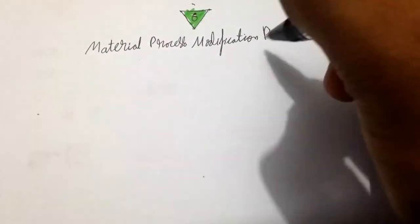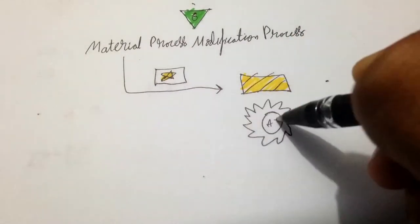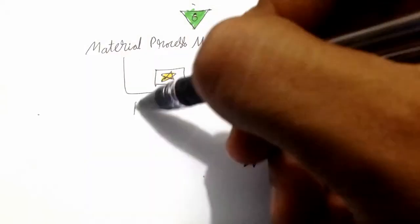Sixth and the last group is material properties modification process which are the processes that provide certain specific properties to metal parts so as to make them suitable for particular operations. Examples include hot and cold working.